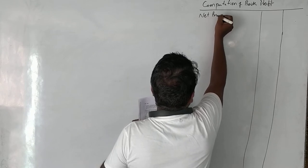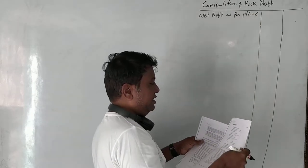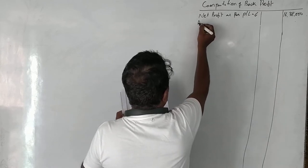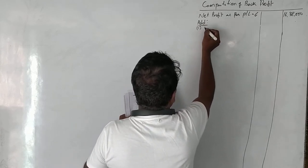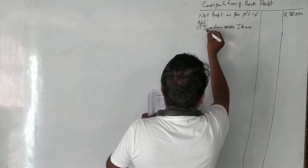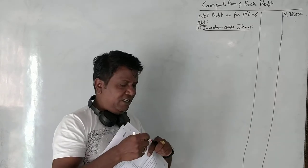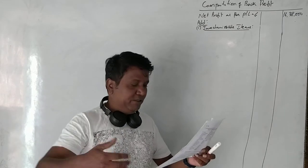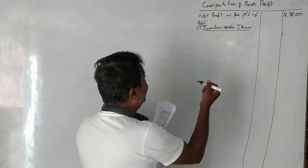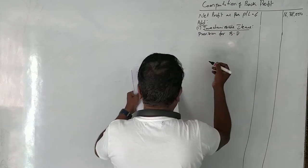First, net profit as per the profit and loss account is ₹16,38,000. To this we need to add certain inadmissible items. Looking at the P&L account: salary to staff is an admissible expense under Section 184, so we leave it. Bad debts is also admissible, but provision for bad debts is inadmissible.